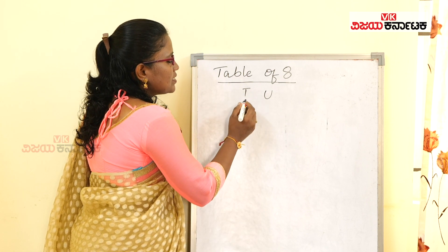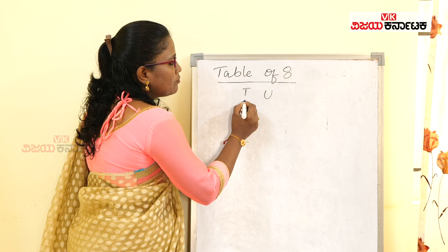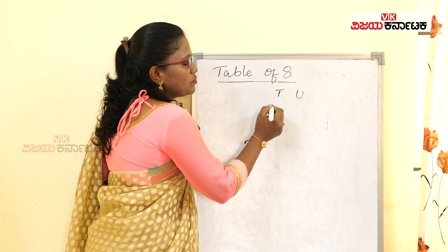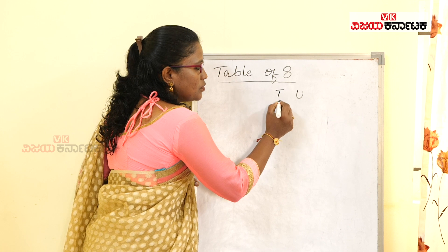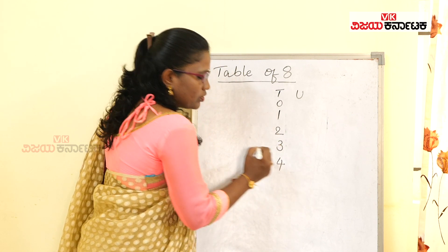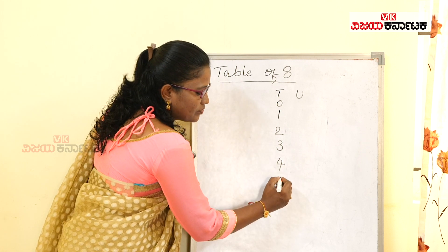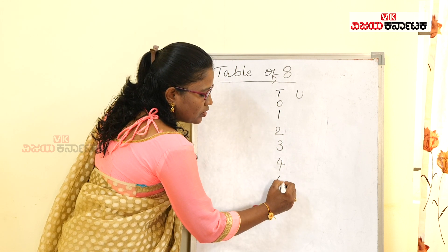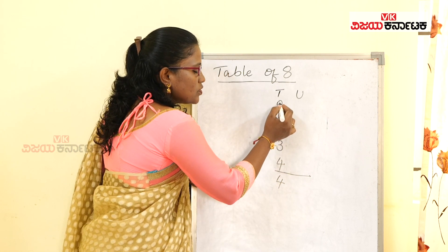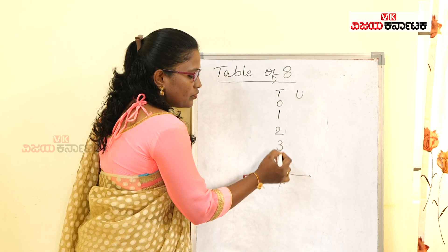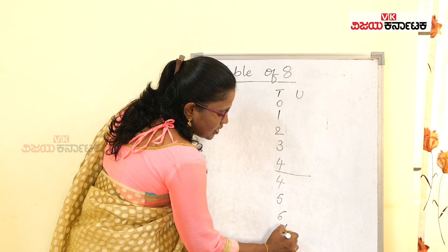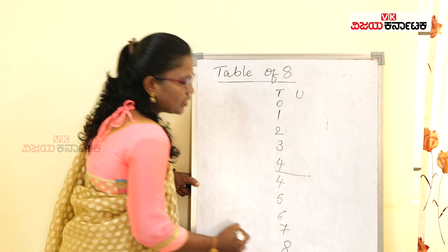Starting with the tens place, the tens place goes 0, 1, 2, 3, 4 — and then start from 4 again: 4, 5, 6, 7, 8. So the tens place pattern is 0, 1, 2, 3, 4 and then continuing 4, 5, 6, 7, 8.